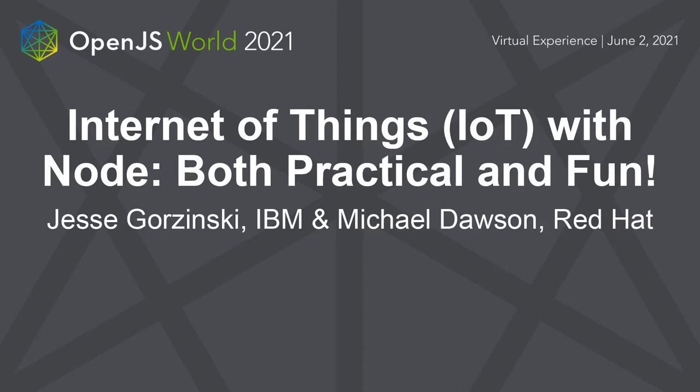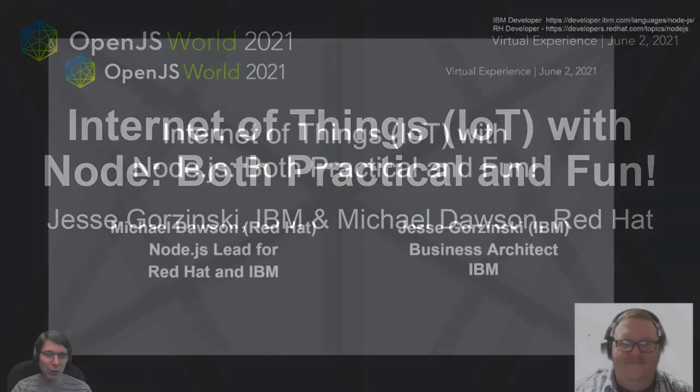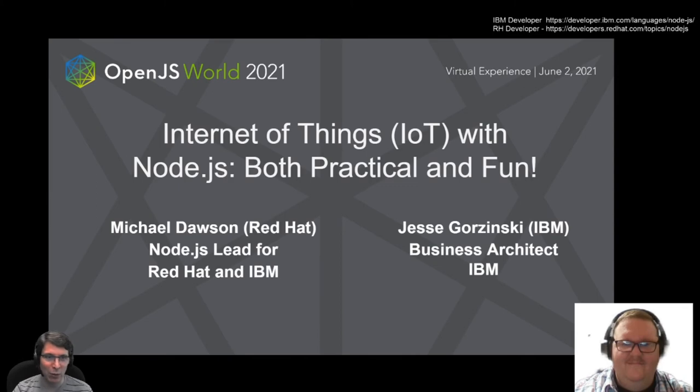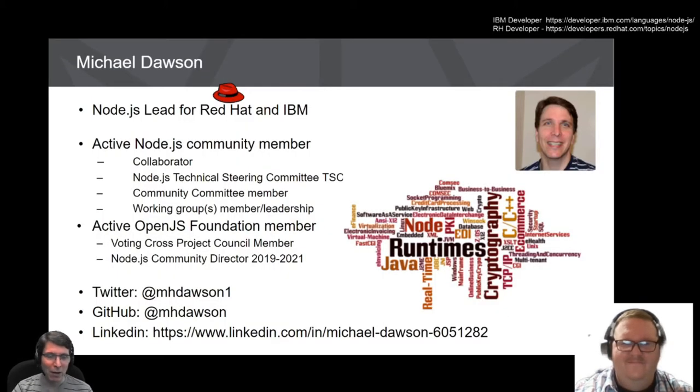Welcome to OpenJS World. Today Jesse and I are going to be talking to you about Internet of Things with Node.js, both practical and fun. Before we get started, a little bit about ourselves. I'm Michael Dawson, the Node.js lead for IBM and Red Hat. What that means is I get to be an active community member. I'm a collaborator, member of the technical steering committee, and generally active across the project.